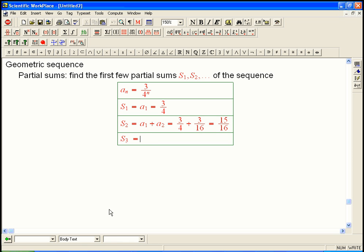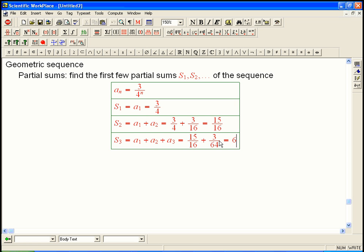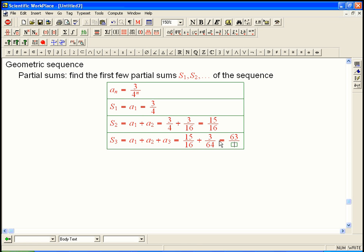S sub 3 is A1 plus A2 plus A3. We're keeping a running total of all the numbers that we see in this sequence. And so that's going to be 15 sixteenths. That's the A1 plus A2 plus 3 sixty-fourths. Well, if I multiply this by 4 over 4, I'm going to get 60 plus 3 is 63, sixty-fourths.